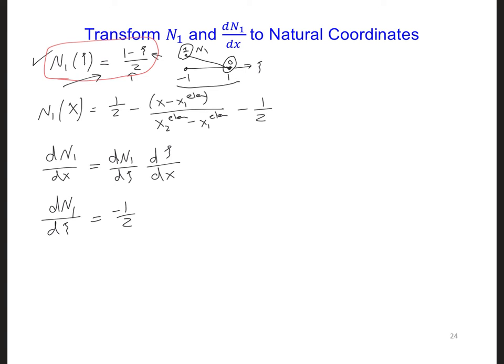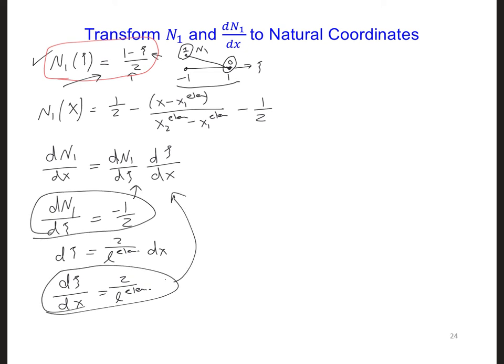And from earlier, we know that dpsi is 2 over the length of the element dx, and so dpsi/dx is then equal to just 2 over the length of the element. Putting all of this together, we can plug in this here and this here, and we get dN1/dx is minus 1/2 times 2 over the length of the element.